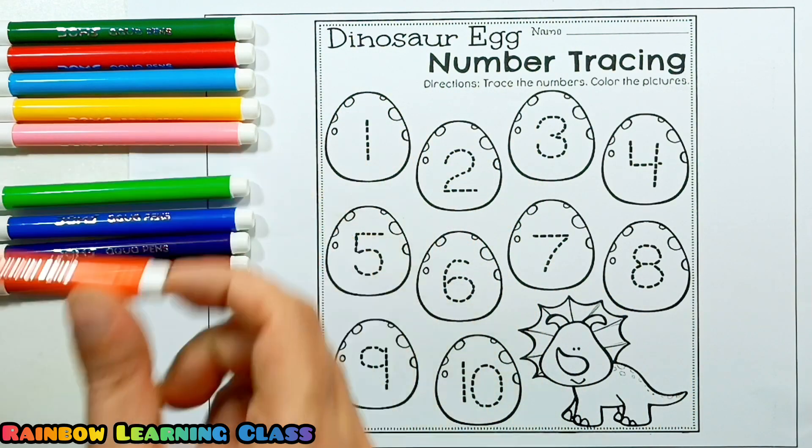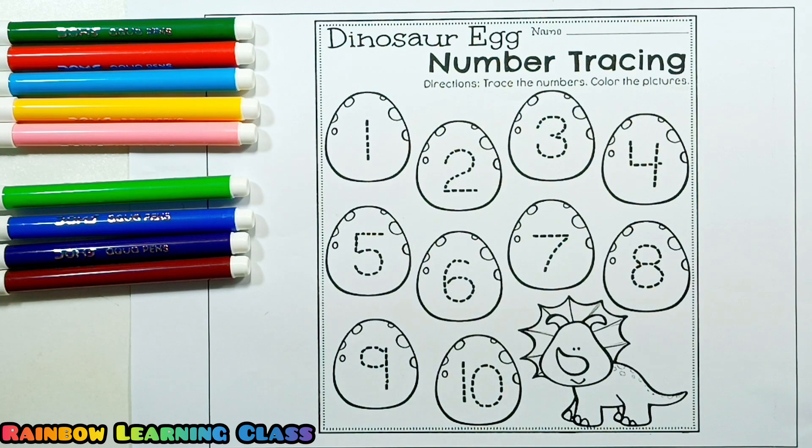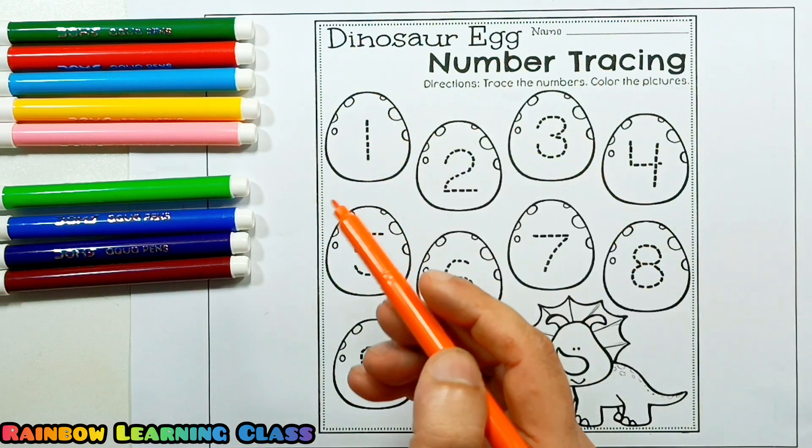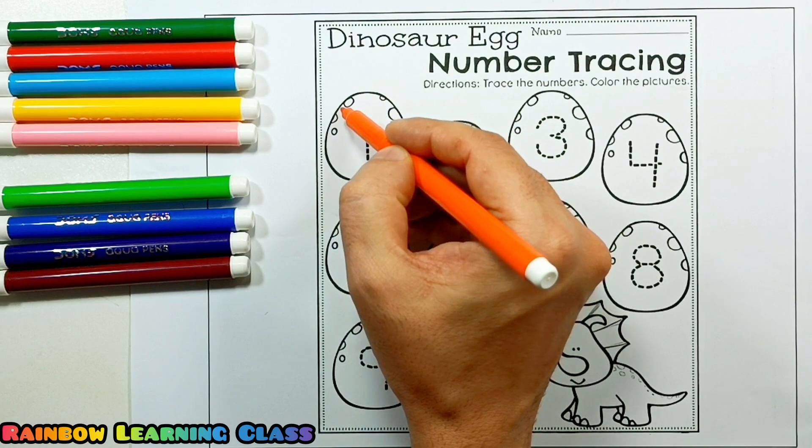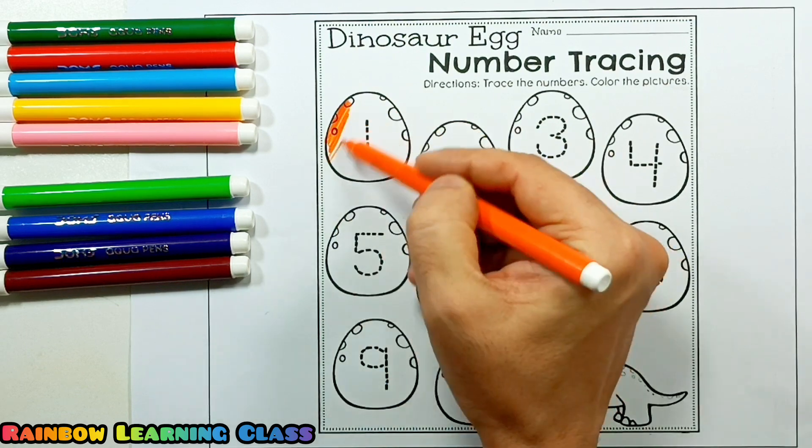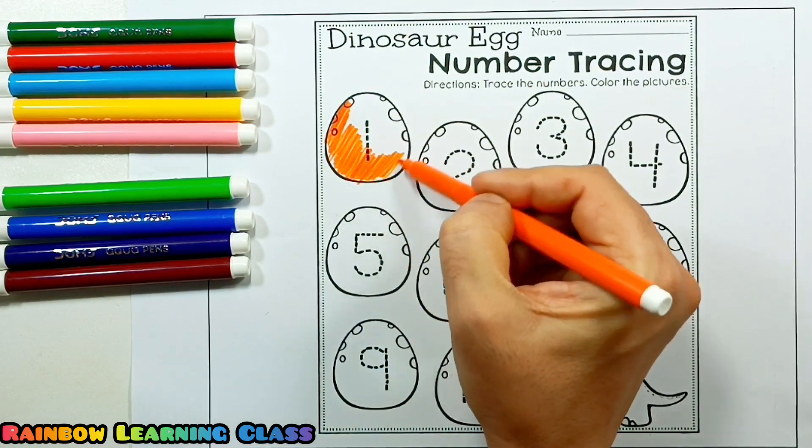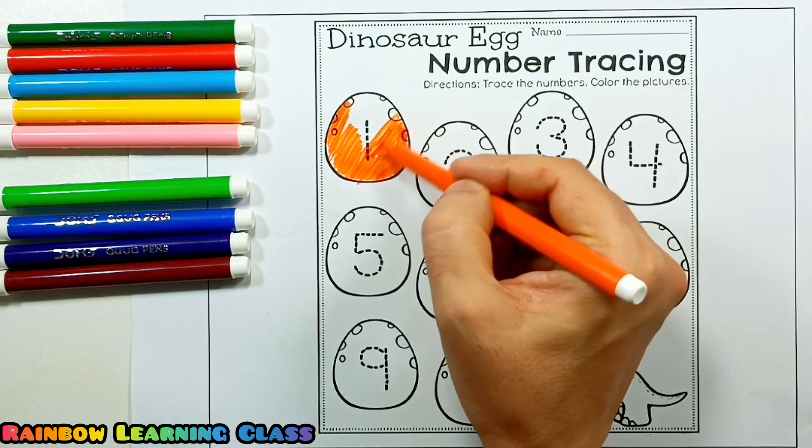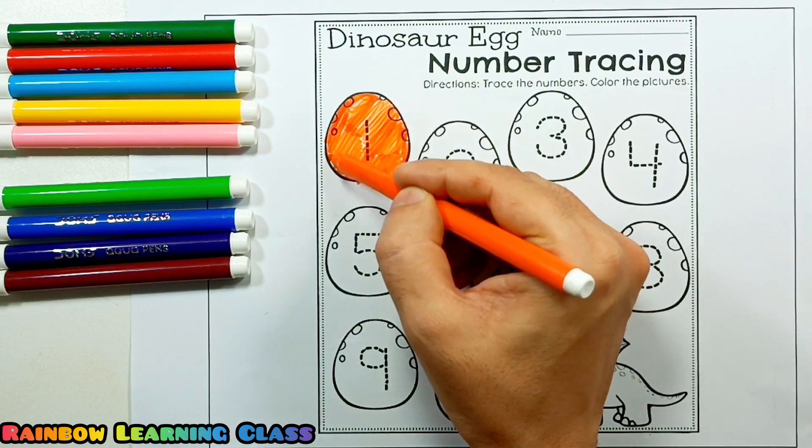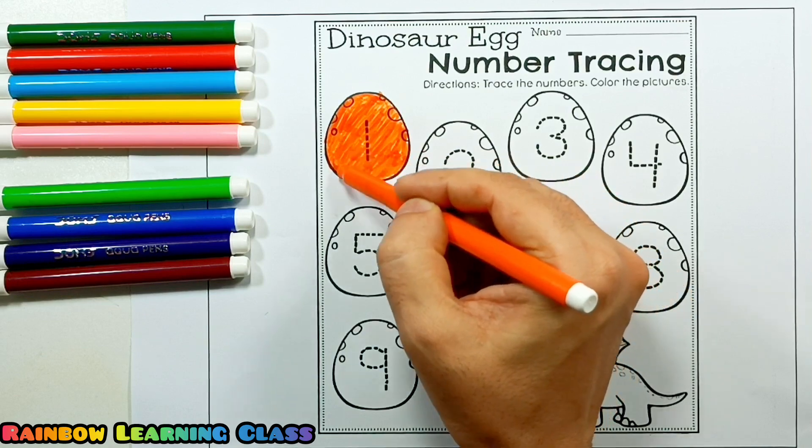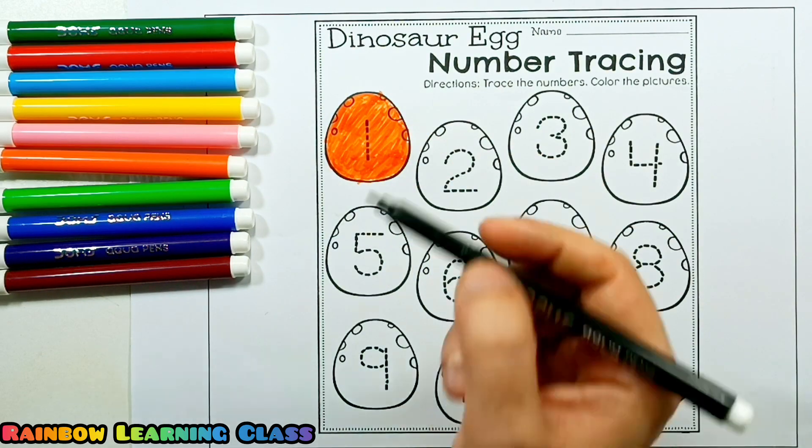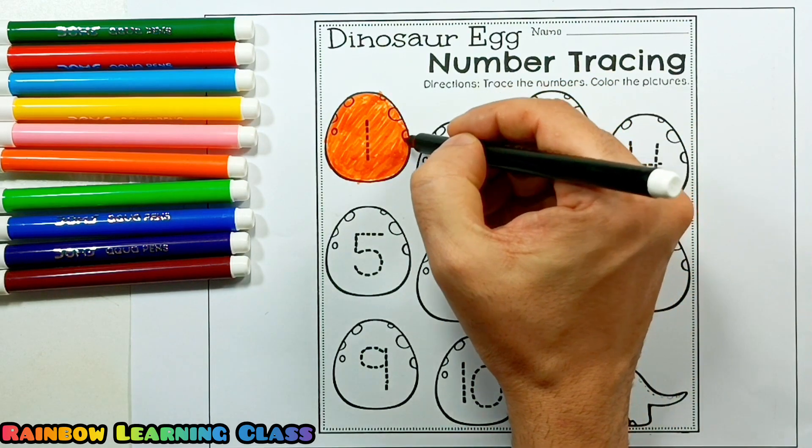Okay! First number! One! One is orange color! One dinosaur egg!